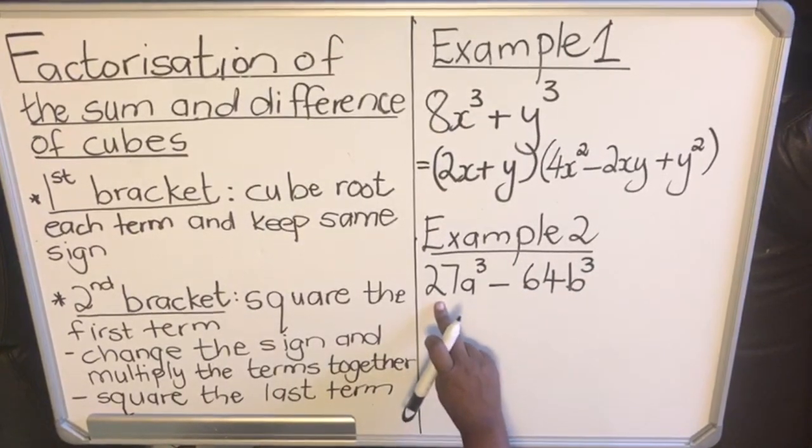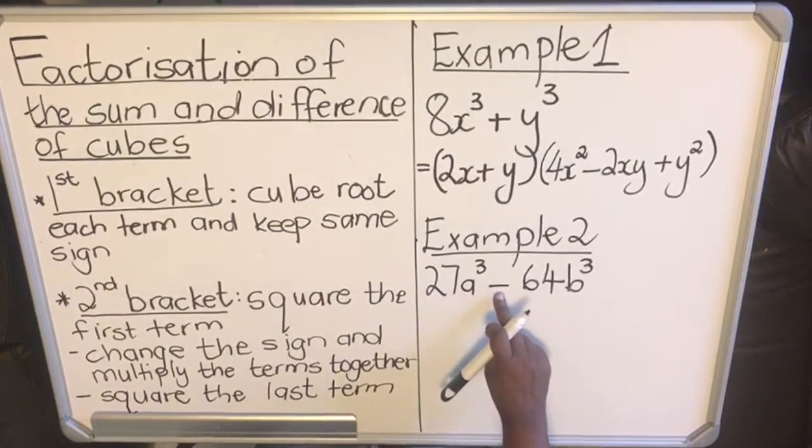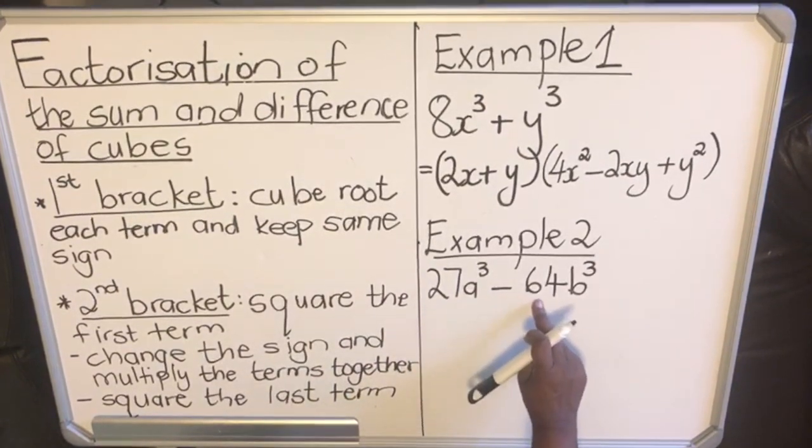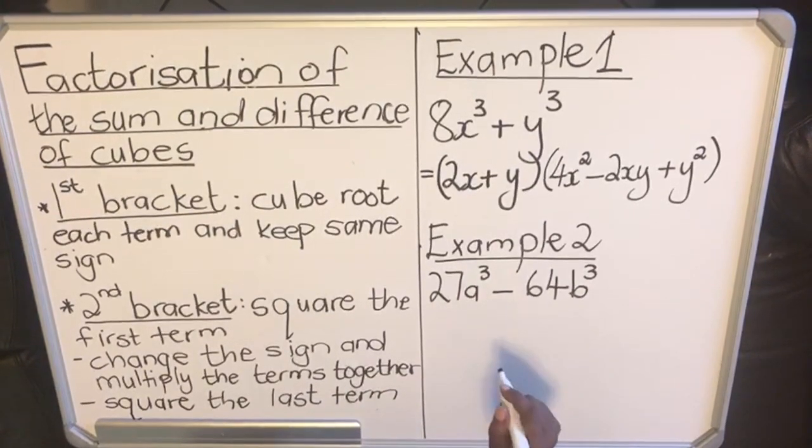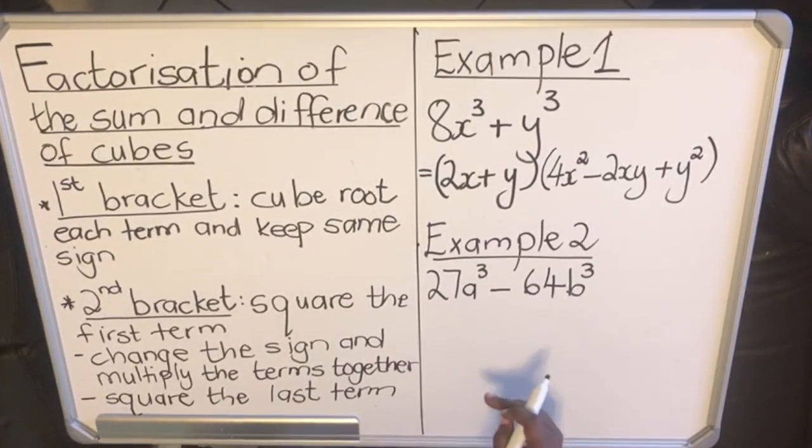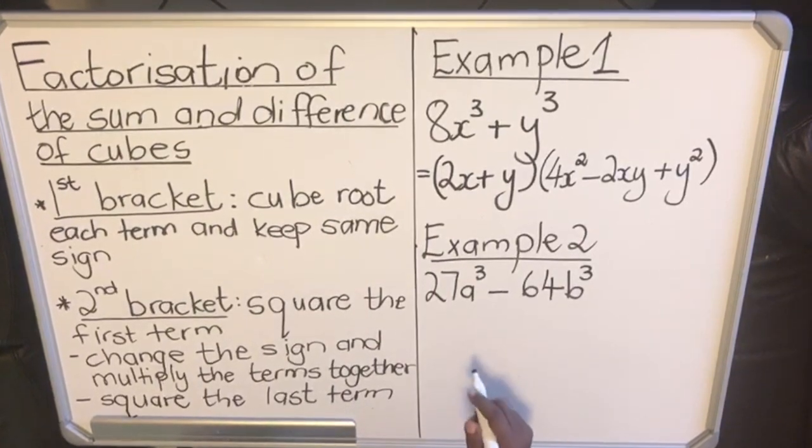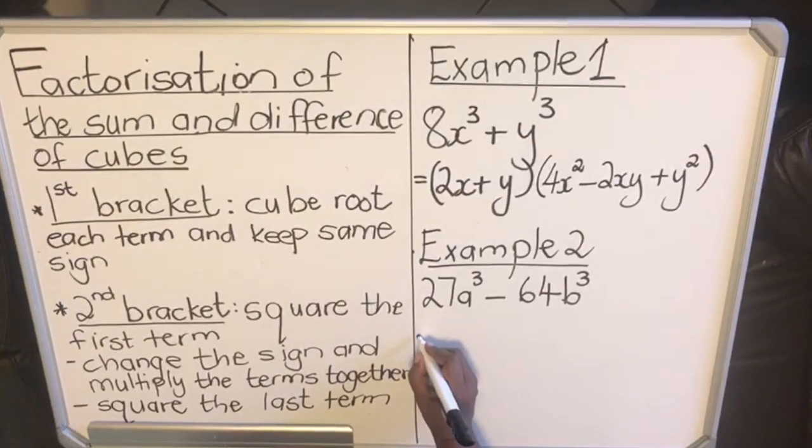Right, our cubes is 27a³ minus - meaning that is a difference - 64b³. Pause the video, try the solution out before you watch me making the solution for you. I hope you have paused the video.